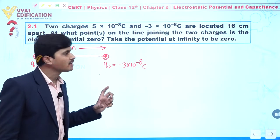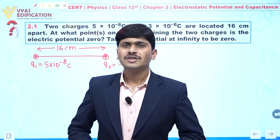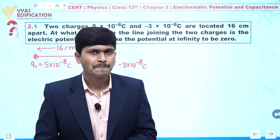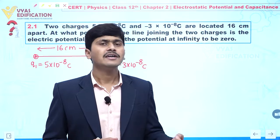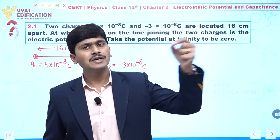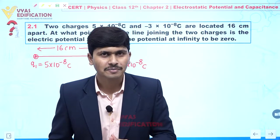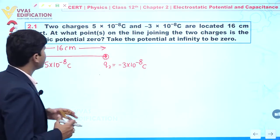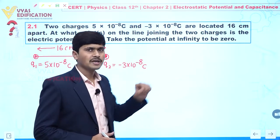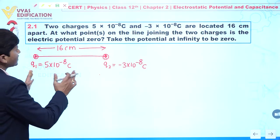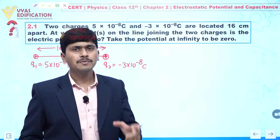At what point on the line joining the two charges is electric potential zero? Electric potential is defined as: if we bring any test charge or unit charge from infinity to a certain point, then the work done per unit charge is known as electric potential at that point. The reference potential at infinity is taken to be zero.